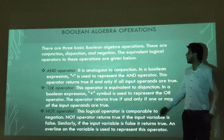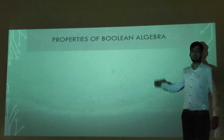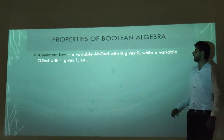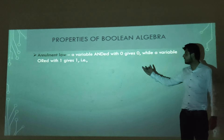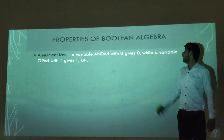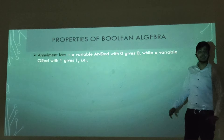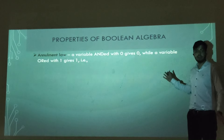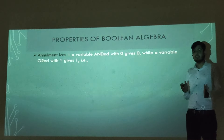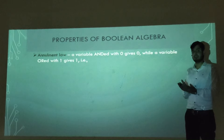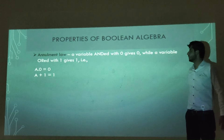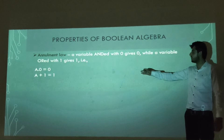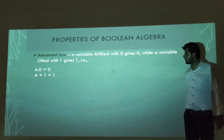The next topic is properties of Boolean algebra. The first property involves the AND operator: if a variable is ANDed with 0, it gives 0; while a variable ANDed with 1 gives itself. As you can see, a dot 0 equals 0, and a dot 1 equals a.